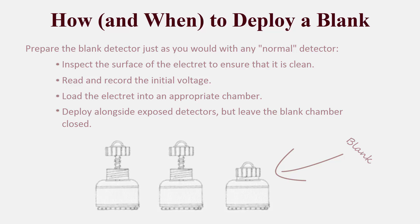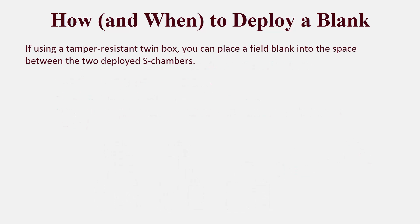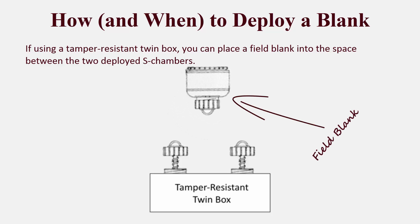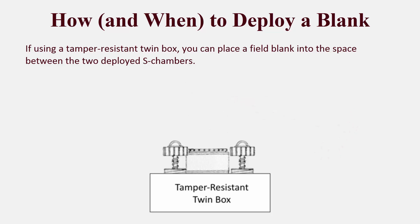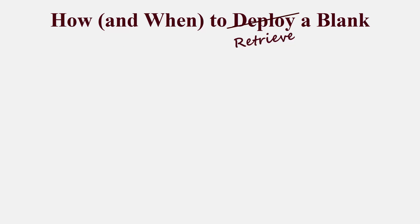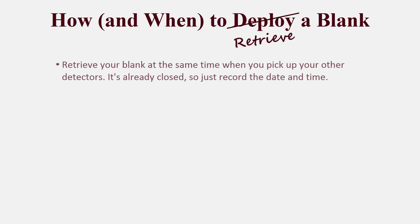If you're using a tamper-resistant twin box, you can place your blank into the space between the two deployed S-chambers. That pretty much covers the deployment aspect of a blank. Once this is all done, there's really not much you can do until you retrieve the radon detectors and conclude the test. Just pick it up alongside your other detectors and, because it's already closed, that's one less thing that you'll have to worry about.